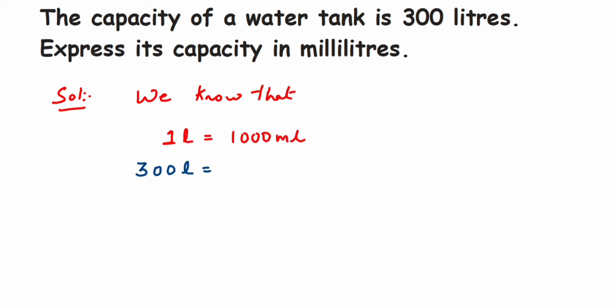We're converting 300 liters to milliliters, so this will be equal to 300 multiplied by 1000 milliliters, because we're converting liters into milliliters and one liter is 1000 milliliters. So this will be equal to 3 lakh milliliters.